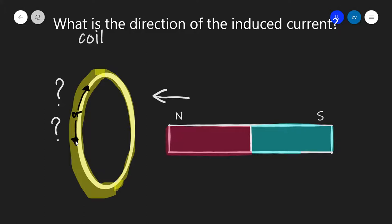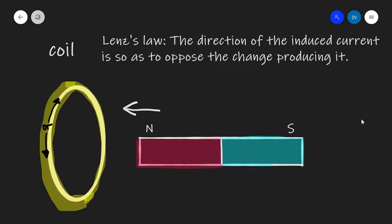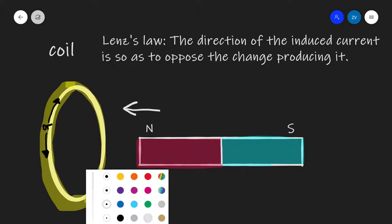Lenz's Law states that the direction of the induced current is so as to oppose the change producing it. What does that mean? This means that if we are producing the current by moving a magnet which is facing the coil with its north pole, then there will be a current which is produced in the coil and that current will produce its own magnetic field which will also have a north-facing direction.